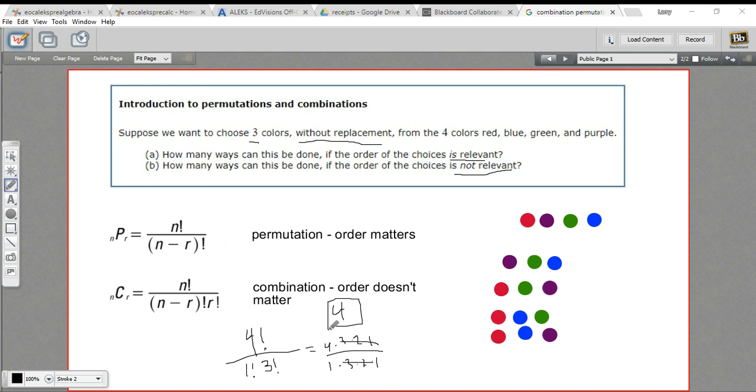Let's see how many combinations, or sorry, permutations there are when the order matters, and we'll use this formula here. So we put 4 factorial on the top again.